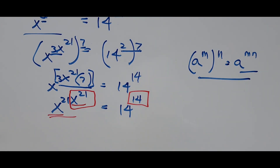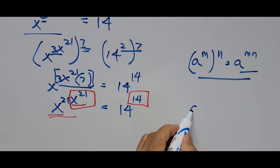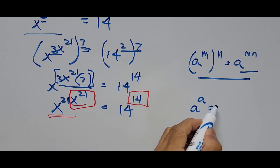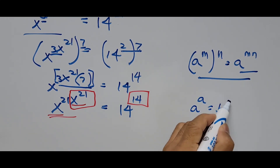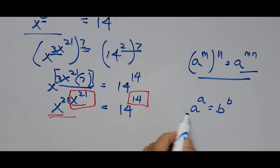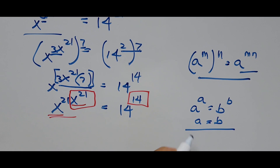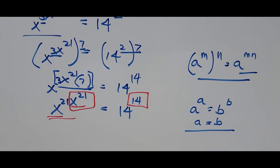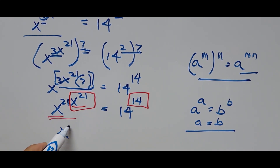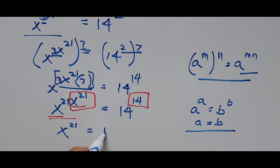Based on the formula — that is a raised to a equals b raised to b means a is equal to b — we're using that principle. So therefore, x raised to the 21st power is equal to 14.